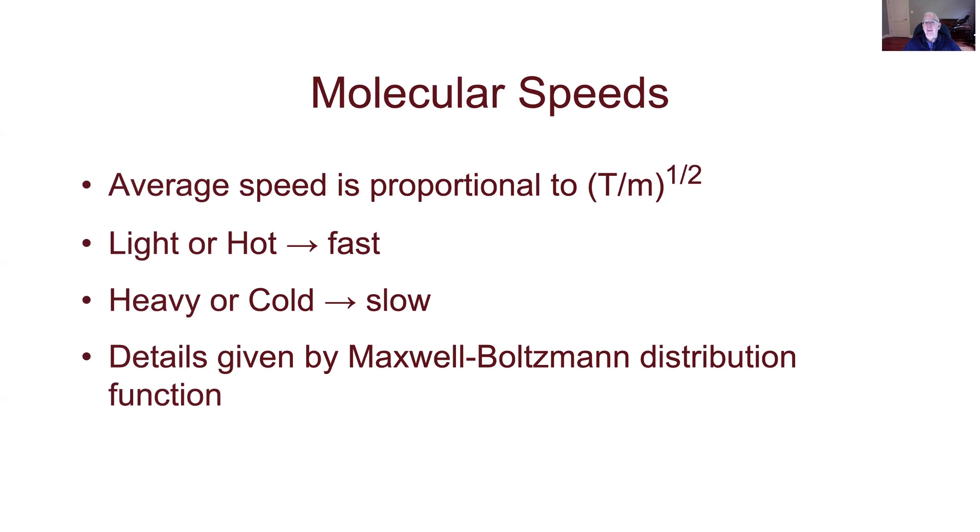So this is a summary of that result. The average speed, and the only caveat there is this root mean square, it's not really the average speed, I'll talk about that a little bit in a second, but it's related to it. It's proportional to the square root of t over m, which again tells us these things. These are the things I think I would like you to just know to say, if the molecules are hotter they go faster, if they're heavier they go slower. The details of this thing are given by an expression known as the Maxwell-Boltzmann distribution function.